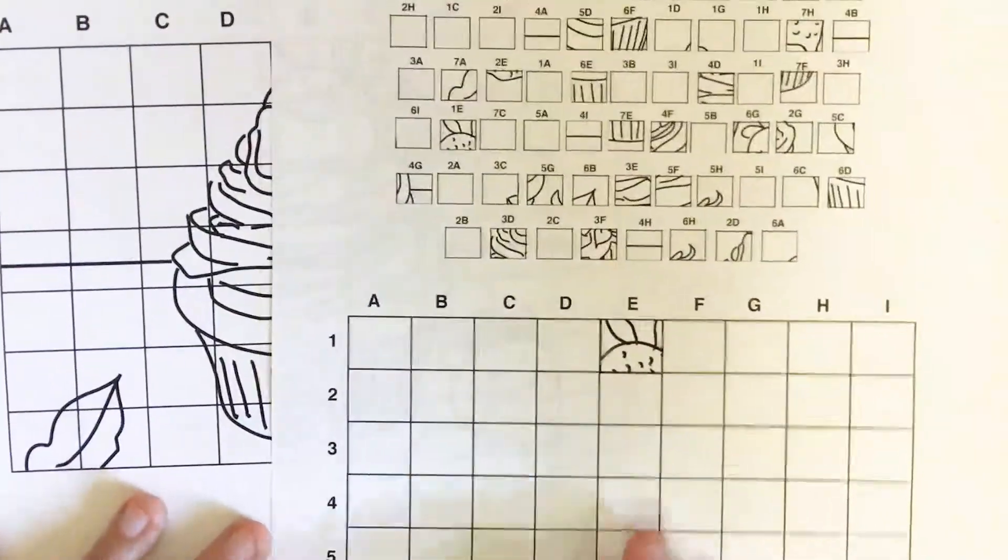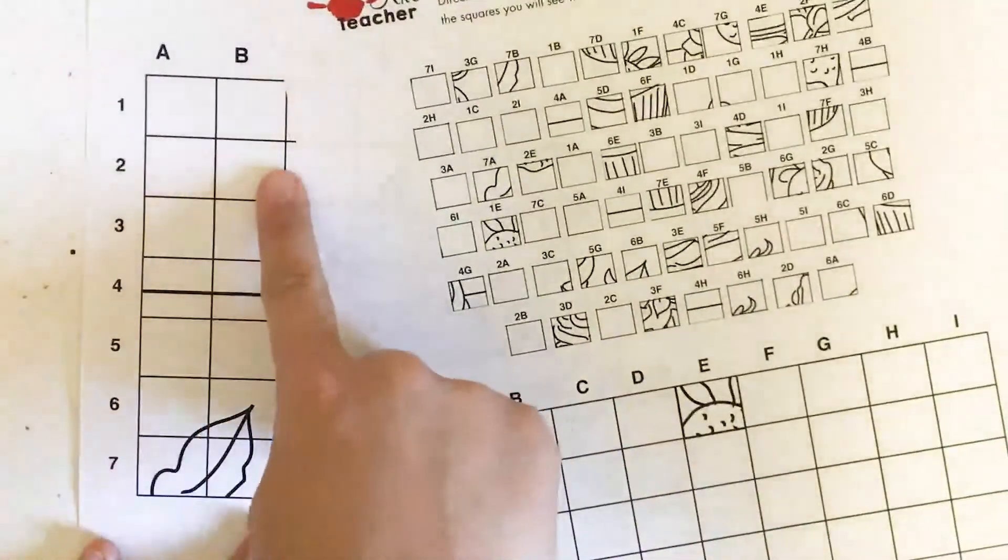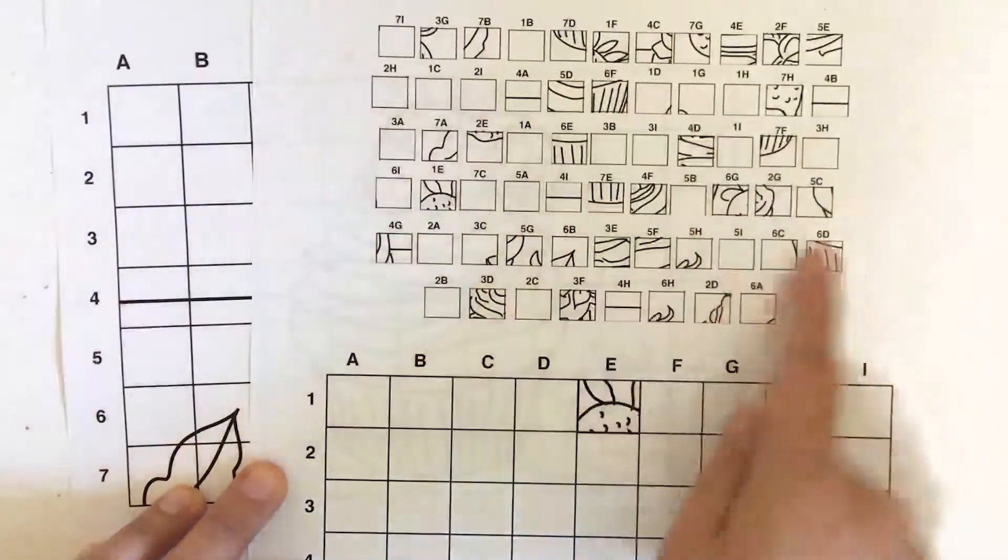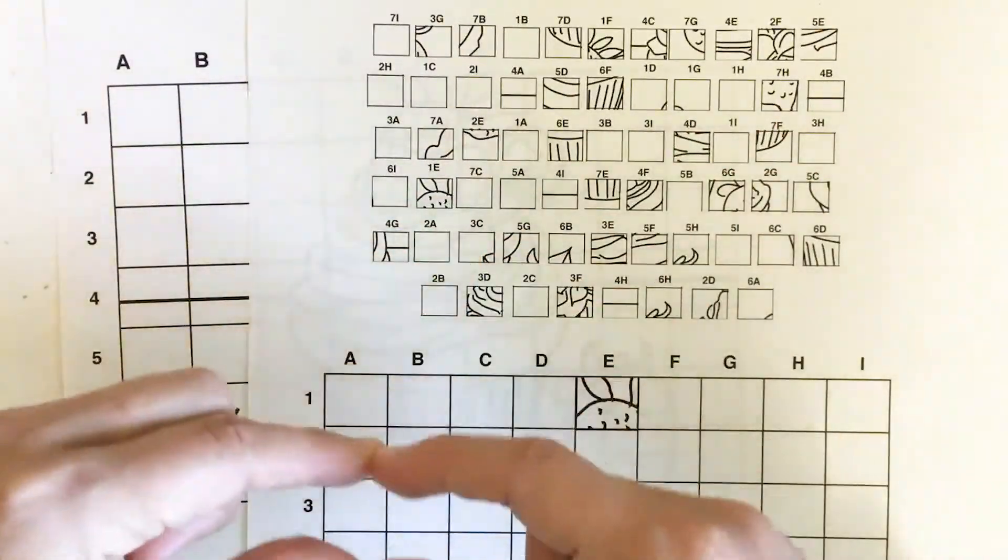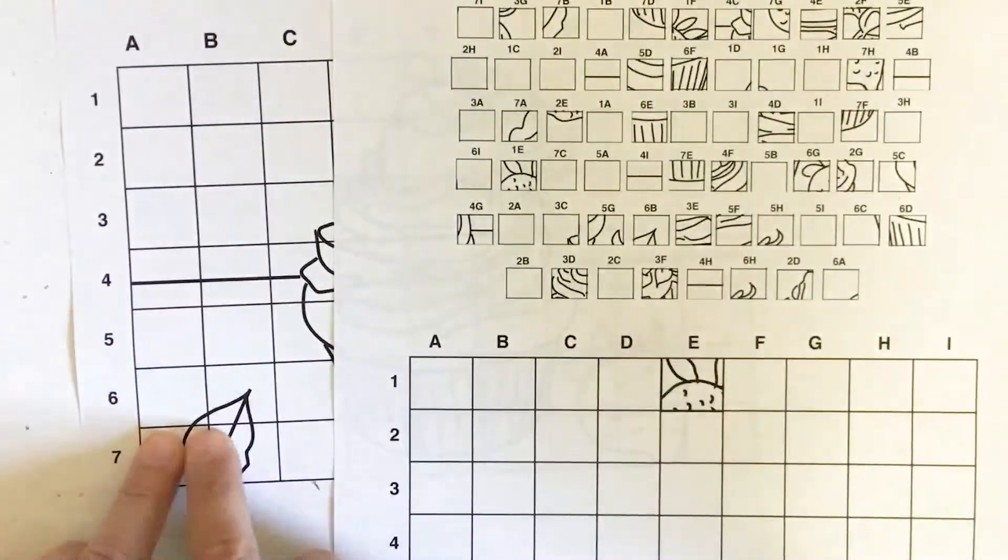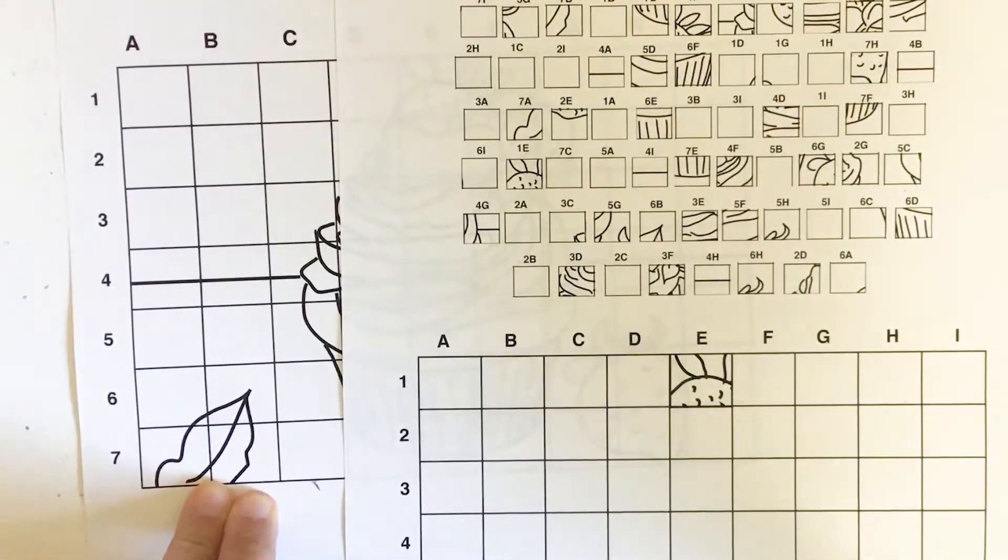What I've done is I've broken up each of these little squares into randomized different squares and broken it down to the single section of actual lines and shapes that you would see in that square.